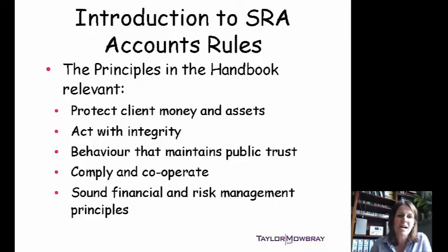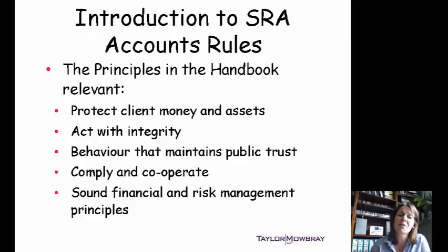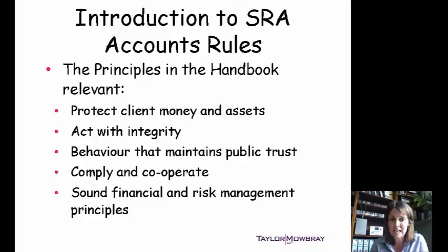The handbook itself has 10 mandatory principles. Those 10 mandatory principles aren't all directly relevant to accounts rules compliance, so the rules themselves refer at the outset to five which are particularly relevant here — they're all there on the slide. Whilst the overall principles in the handbook are that solicitors must protect any client money and any other assets, the rules are only dealing with the money. These accounts rules only deal with the money, not specifically with any other assets that you hold for a client — perhaps as a trustee. So money as a trustee, money acting for other clients — absolutely — other assets are not covered by these particular rules.